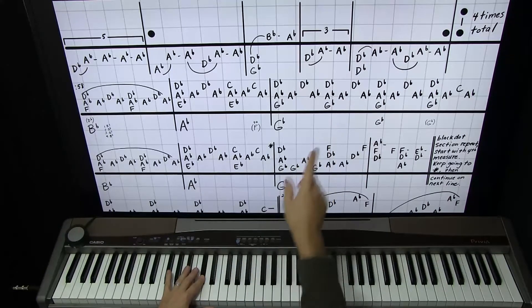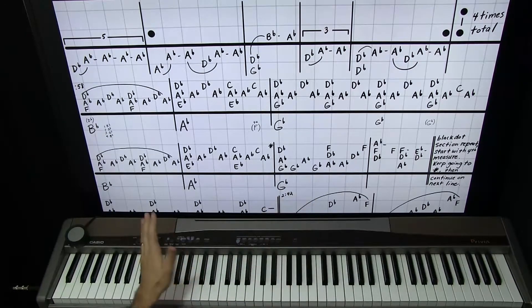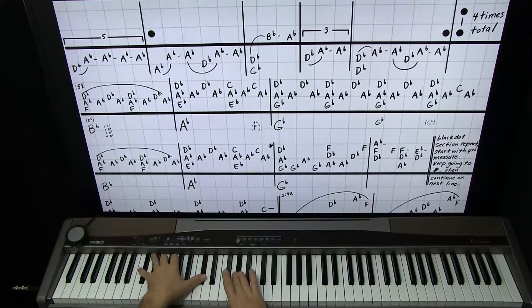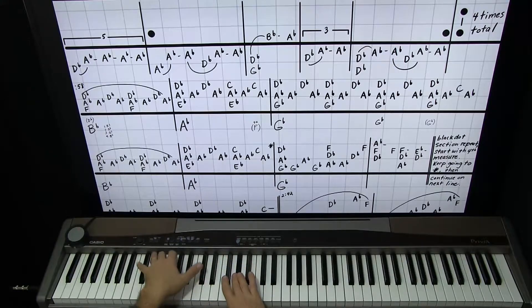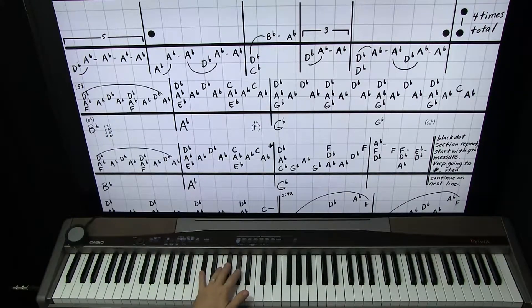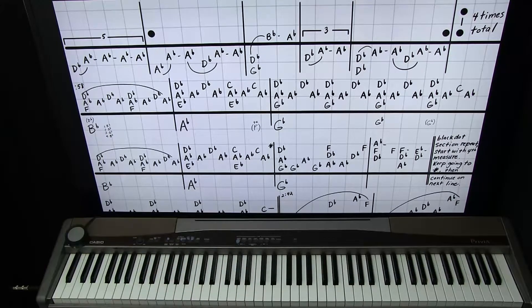One more measure and then we'll start putting it together. So it's D flat octave in the left hand. Then right hand can do A flat, A flat again, D flat left, right hand A flat, another A flat. Or you can do right, left hand, all of it. Whatever you fancy.